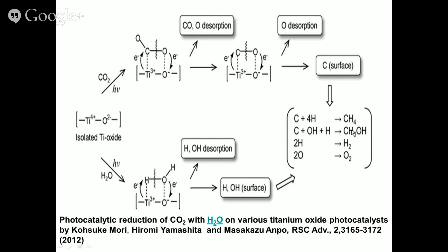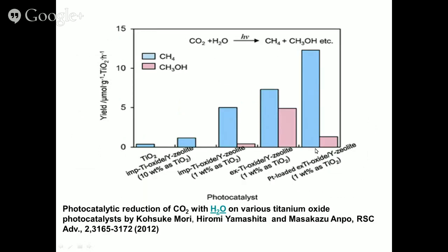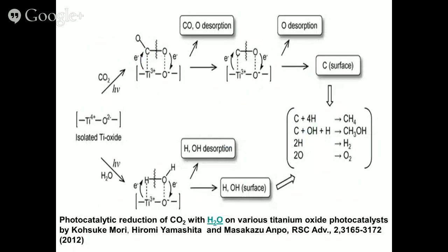Once we have that carbon on the surface of the isolated site, we can add hydrogen to produce methanol, methane, water, and oxygen. For the same isolated TiO4 polyhedron, if we put a photon and water, water gets adsorbed similarly to CO2. The O–H bond is broken, the surface OH group is present, and hydrogen is desorbed. This surface OH group then provides hydrogen to the carbon surface, giving rise to various hydrocarbons. This is the type of mechanism that has been proposed.